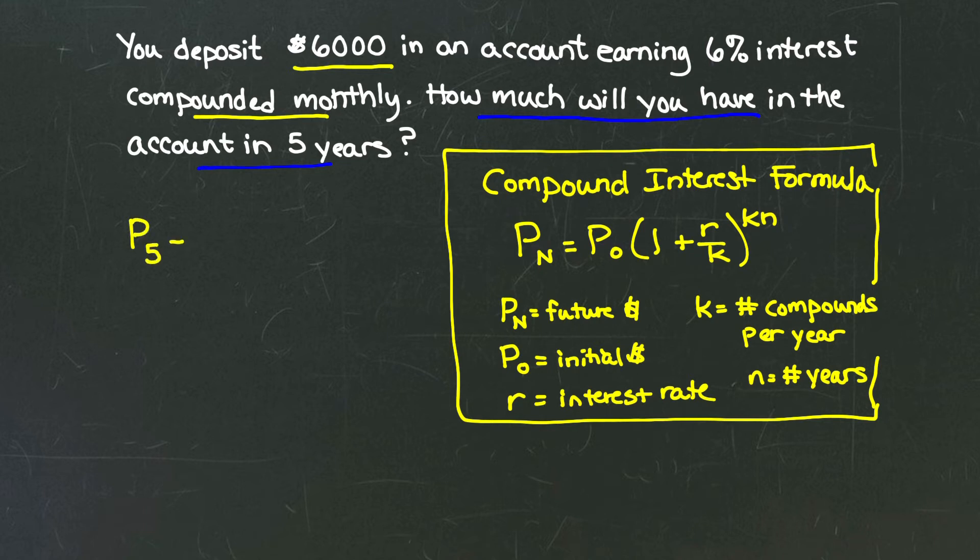What is P sub 5? P sub 5 equals our initial deposit of $6,000 times the quantity 1 plus our interest rate. Our interest rate is 6%, so that's 0.06 divided by k. K is the number of compounds per year. The keyword monthly tells us that k equals 12, because there are 12 months in a year. So I'm going to put 12 as the denominator.